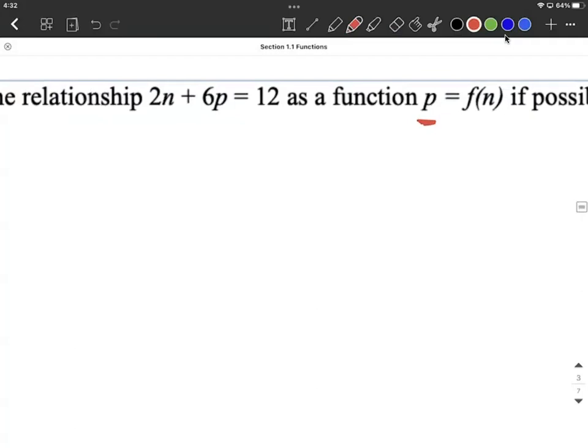So in solving this down and getting p on one side by itself, we can treat this like a linear equation. We want to move the 2n to the other side, away from the p, so subtract 2n from both sides.